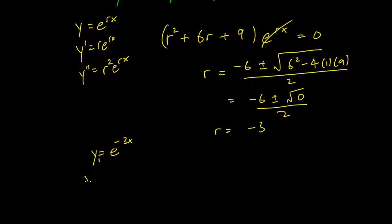And I claim that the second solution is going to be y2 equals x times e to the minus 3x.